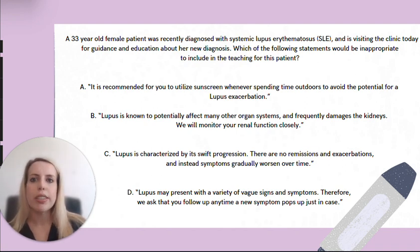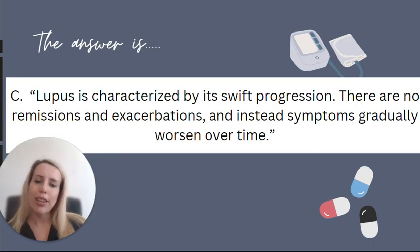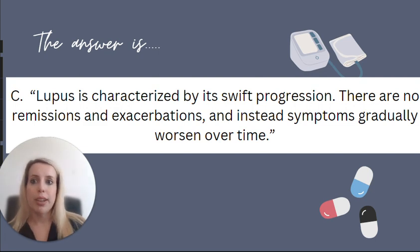So that means our answer choice is C: 'Lupus is characterized by a swift progression; there are no remissions and exacerbations, and instead symptoms gradually worsen over time.'